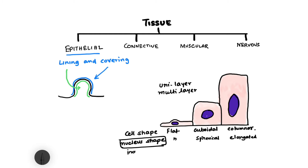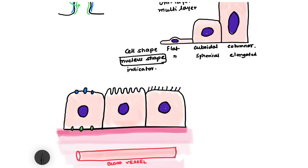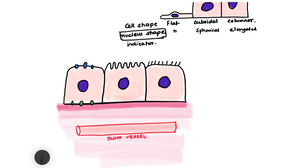Epithelial tissue is present over a connective tissue, and this underlying connective tissue has a very important role. It contains blood vessels, and nutrients and oxygen diffuse out from these blood vessels into the epithelial tissue above.